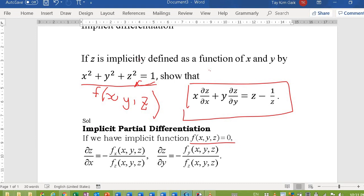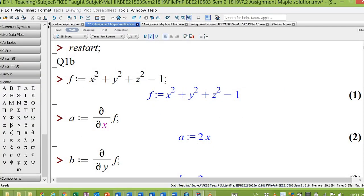f(x, y, z) = 0. So f is x² + y² + z² - 1.